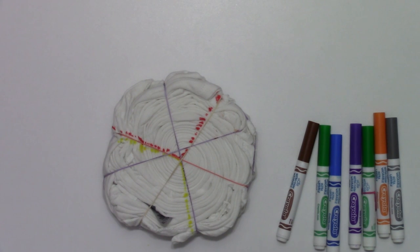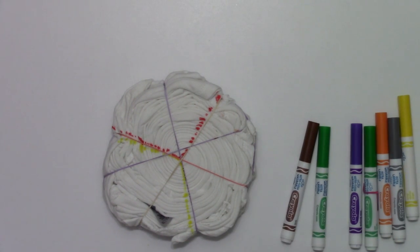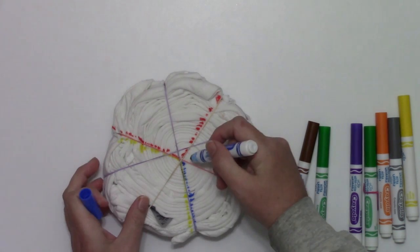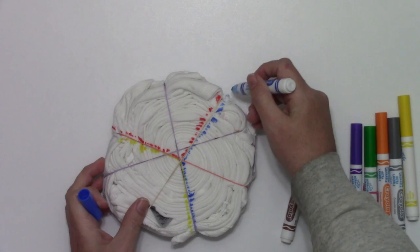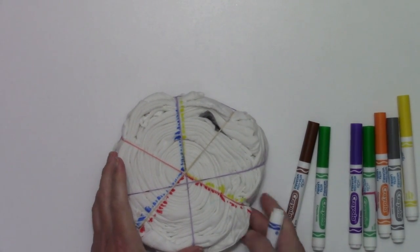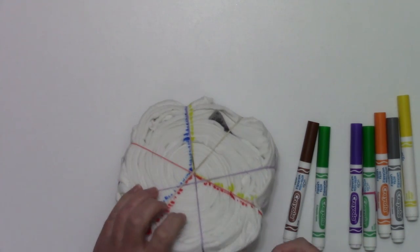Then we'd have green, blue, for this side. Okay, so we're gonna flip this over.